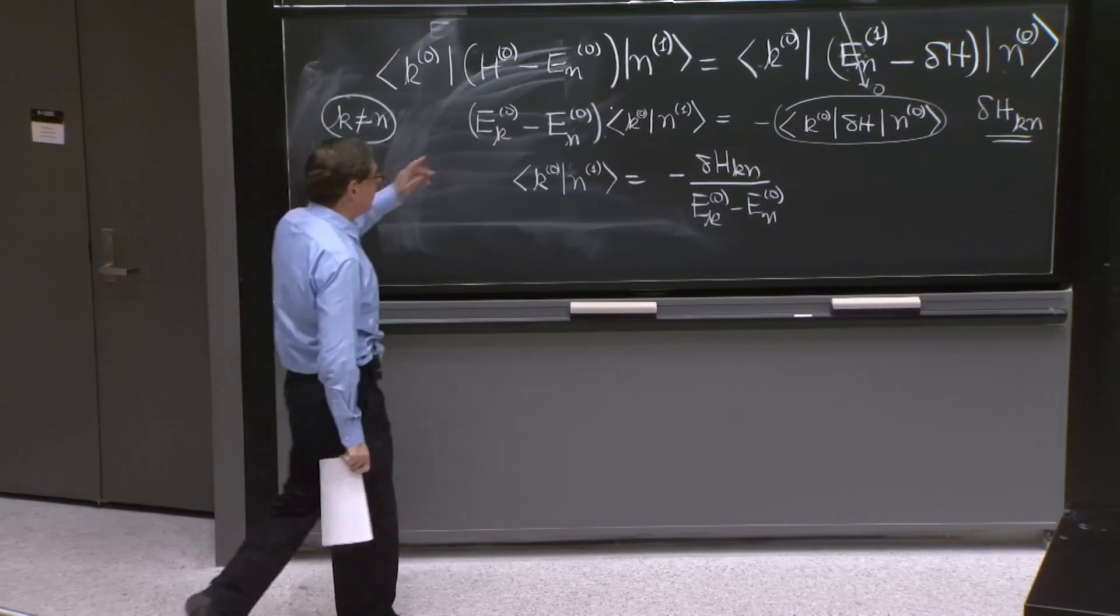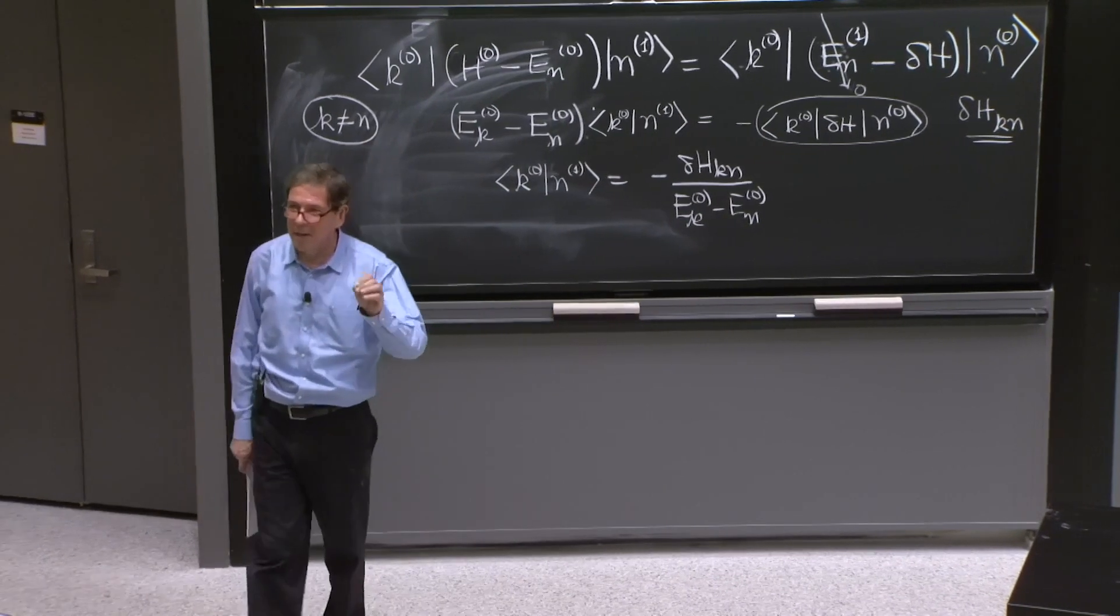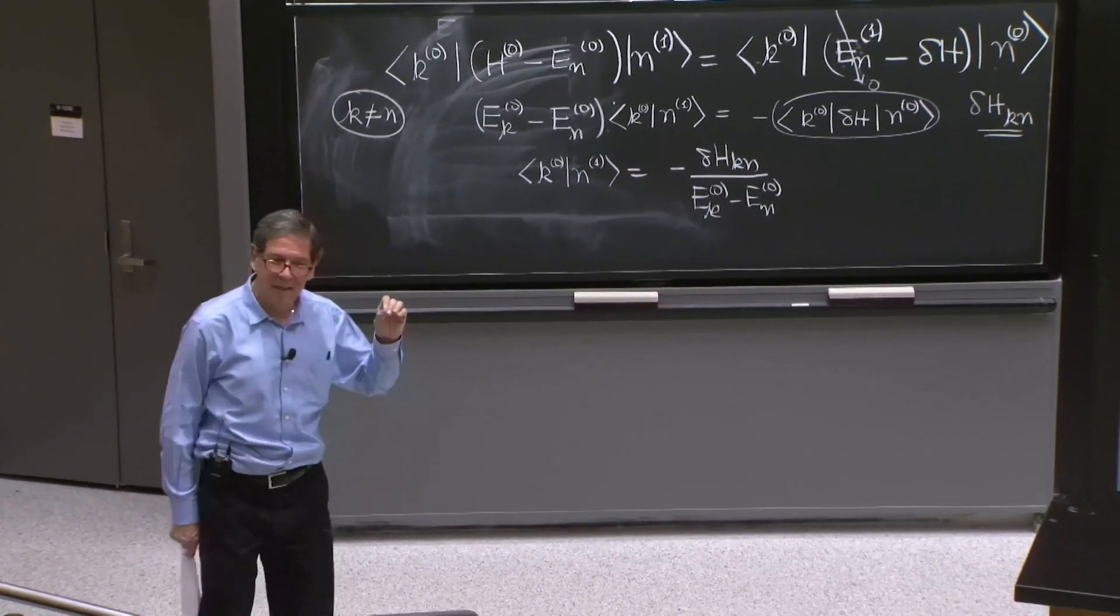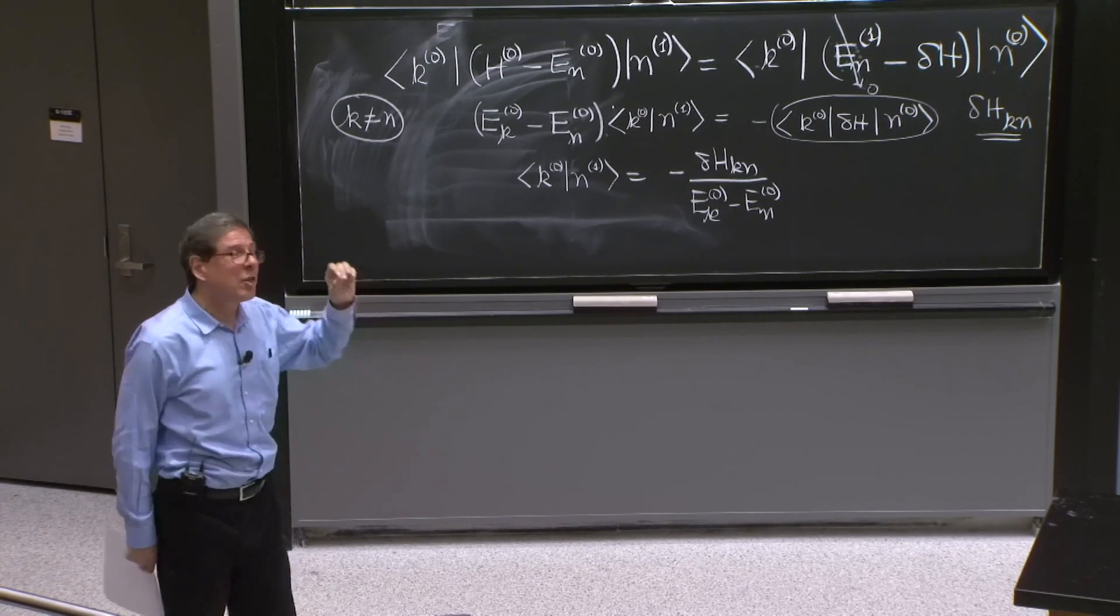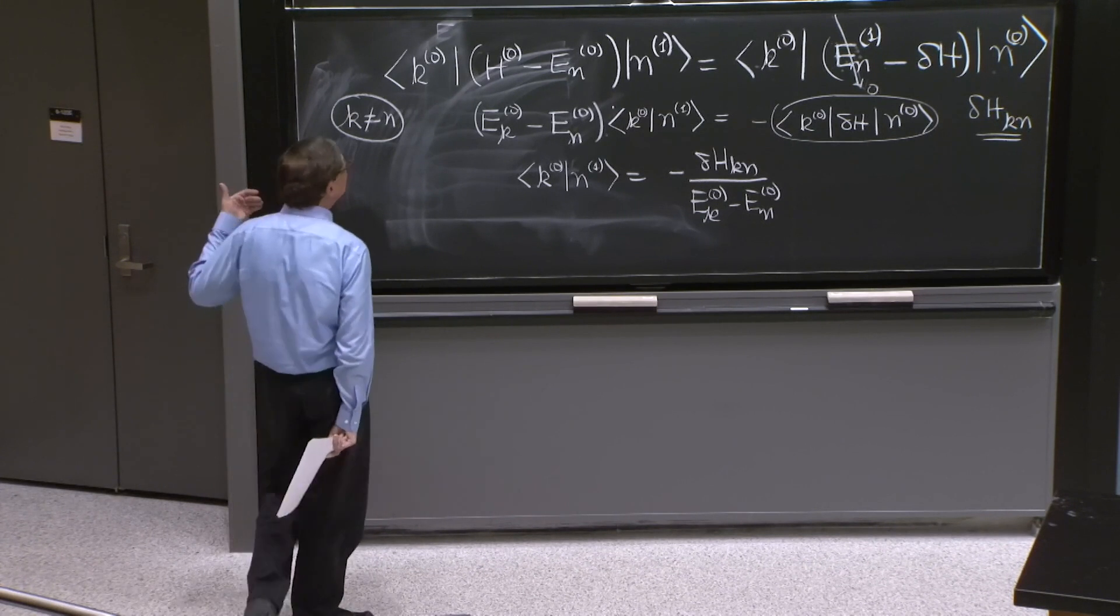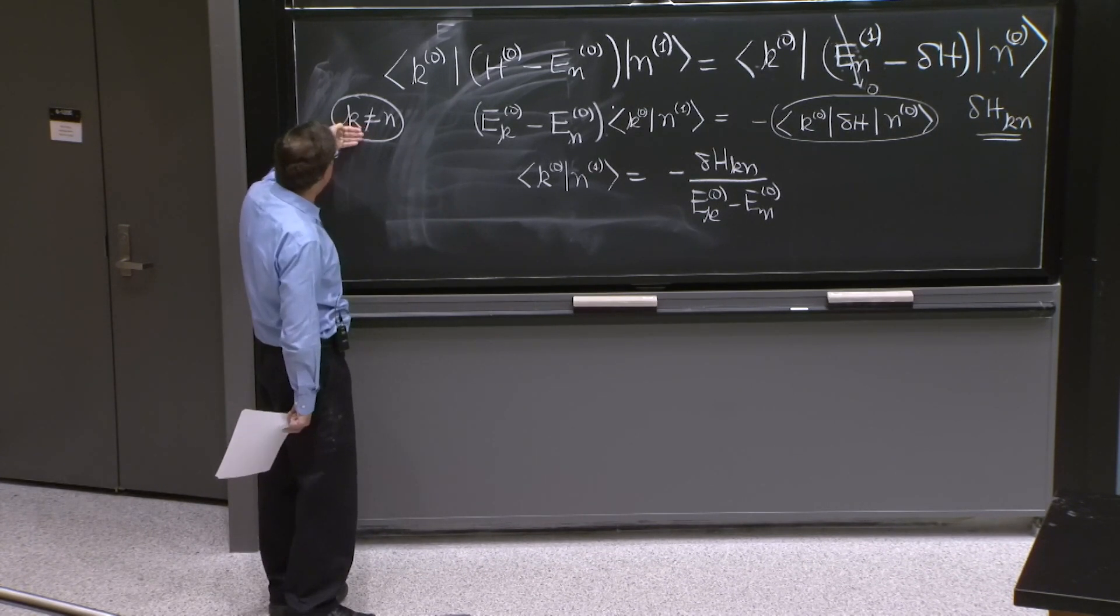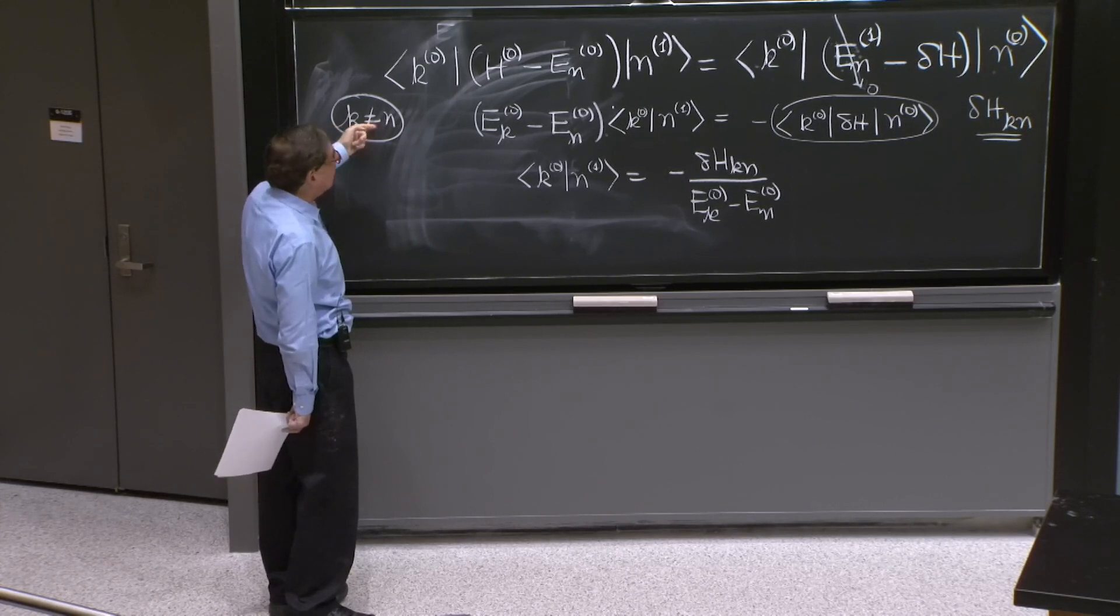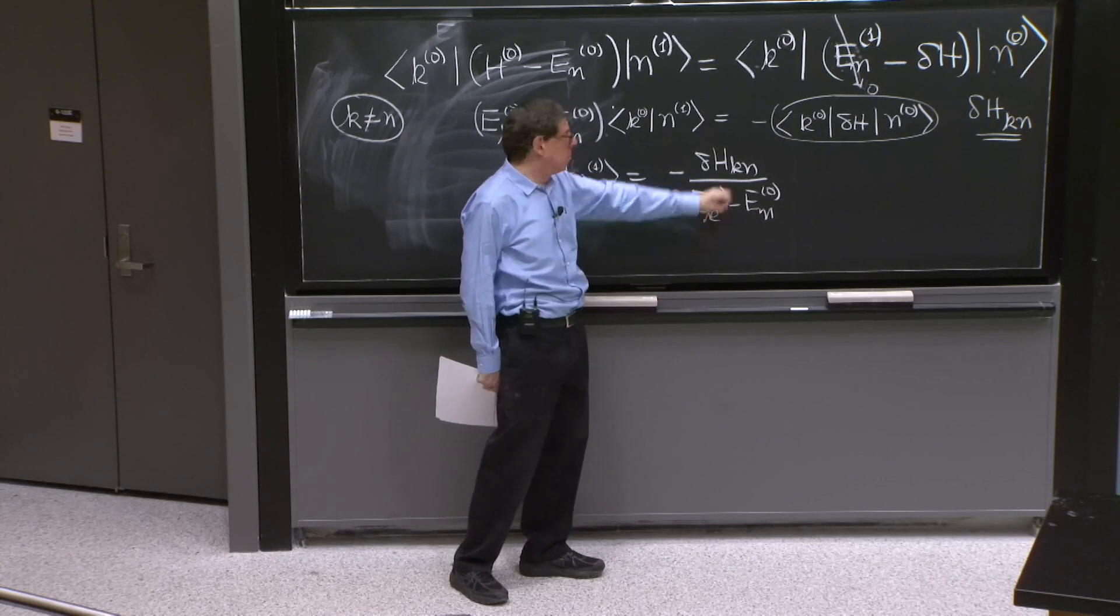And here we find, for the first time, our energy denominators. These energy denominators are the things that are going to make life interesting and difficult. And it answers the question already that if you had degenerate states, there would be some k states that have the same energy as this one, and this blows up.